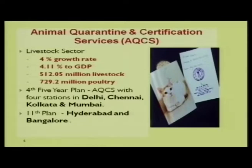Regarding the livestock sector, the average livestock growth rate in India over the past three decades is about 4%, contributing about 4.11% to the gross domestic product. We have a huge livestock population of 512 million and 730 million poultry. Recognizing the importance of animal quarantine certification services to boost food trade, during the fourth five-year plan, AQCS — Animal Quarantine Certification Services — a central sector scheme, was implemented by the Government of India with four stations in four metros: Delhi, Chennai, Kolkata, and Mumbai. During the 11th plan, the facility was extended to Hyderabad and Bangalore.